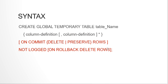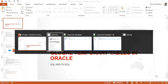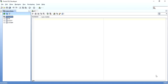At the end there is also NOT LOGGED ON ROLLBACK DELETE ROWS. By default it is NOT LOGGED ON ROLLBACK DELETE ROWS, meaning when a rollback is applied the rows get deleted. Now let's get into the development — how to create a GTT and how to use it.